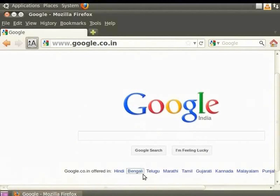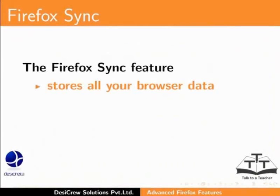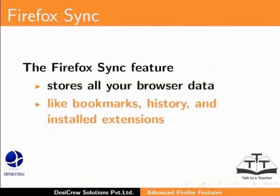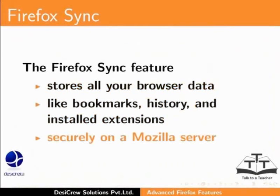Suppose you want to access the Firefox browser with your settings and preferences from any other computer or device like your mobile phone. Would that be possible? Yes! The Firefox Sync feature stores all your browser data like bookmarks, history, and installed extensions securely on a Mozilla server. You can sync other computers to this server and so can access your browser data.